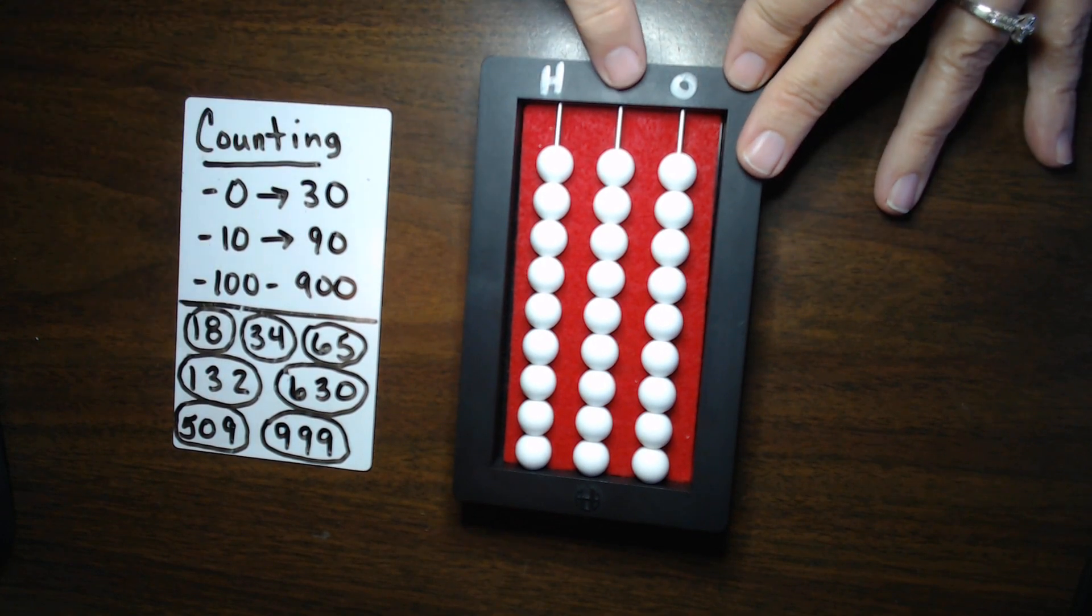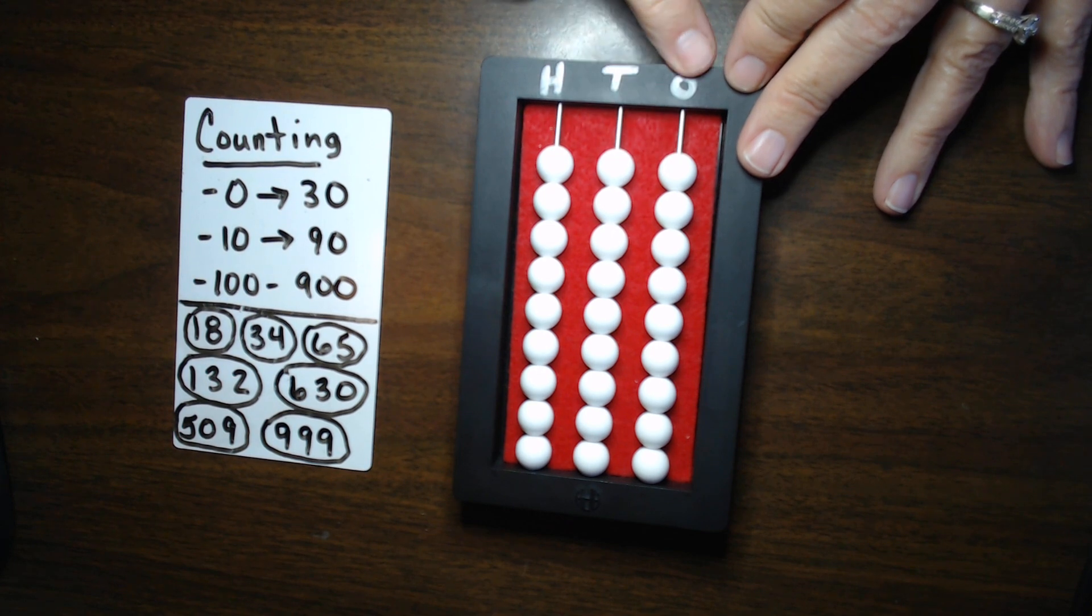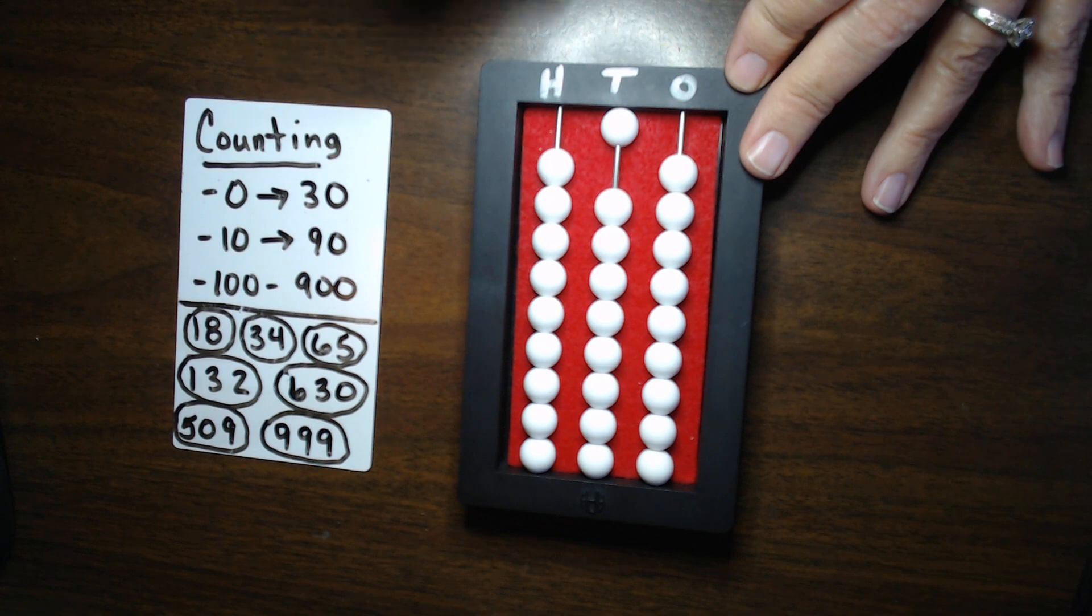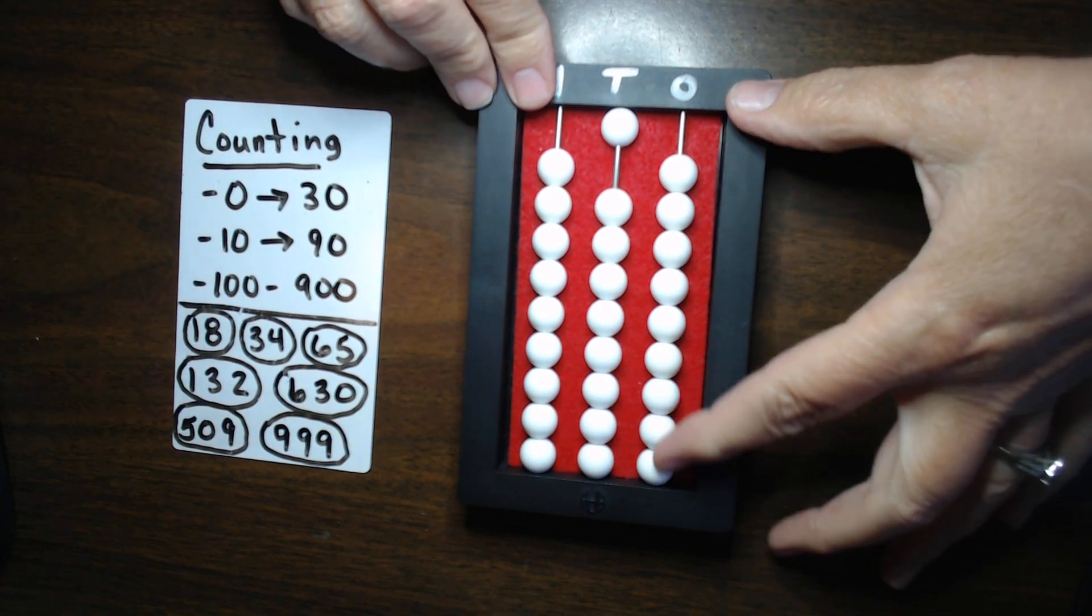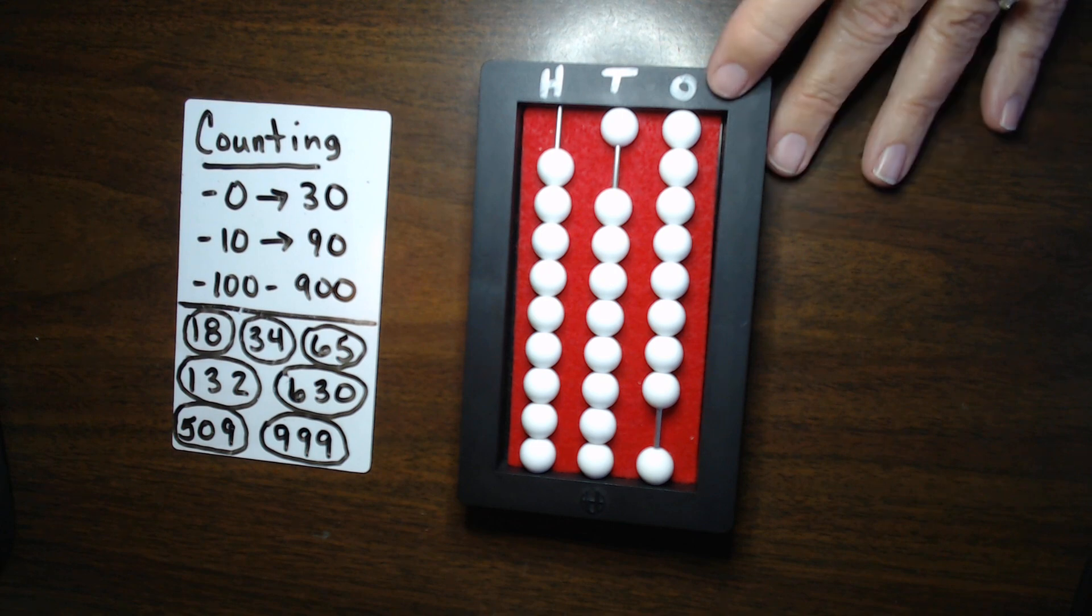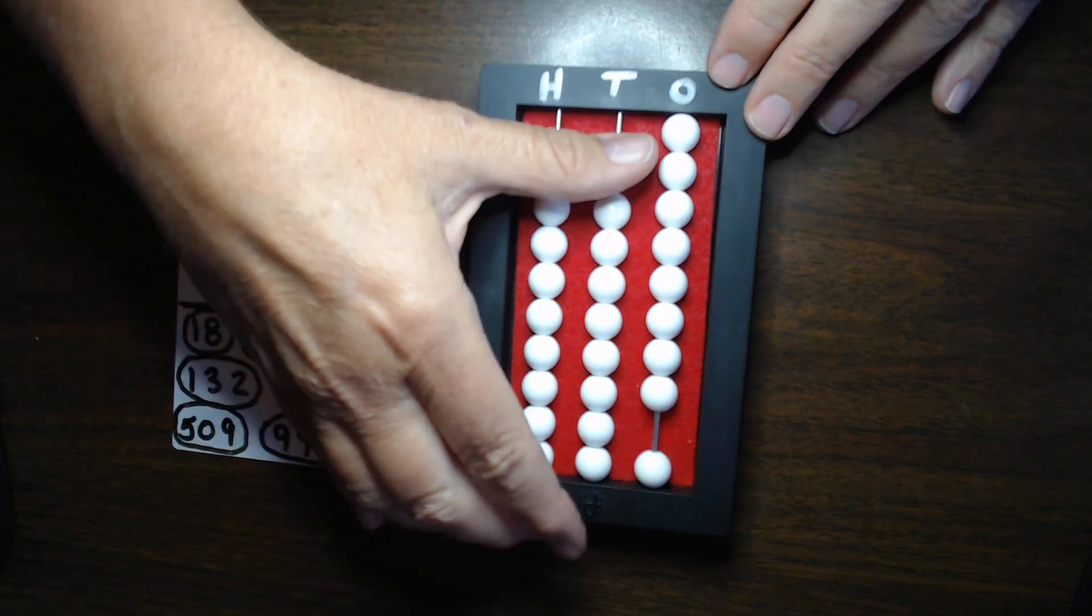Alright. Let's set 18. So, we know an 18 is the 1 and an 8. We know the 1 is in the 10s column. So, we set 1. The 8 is in the 1s column. So, we set 8 beads. And there you have it. 18. Alright. Or a 1, 8.